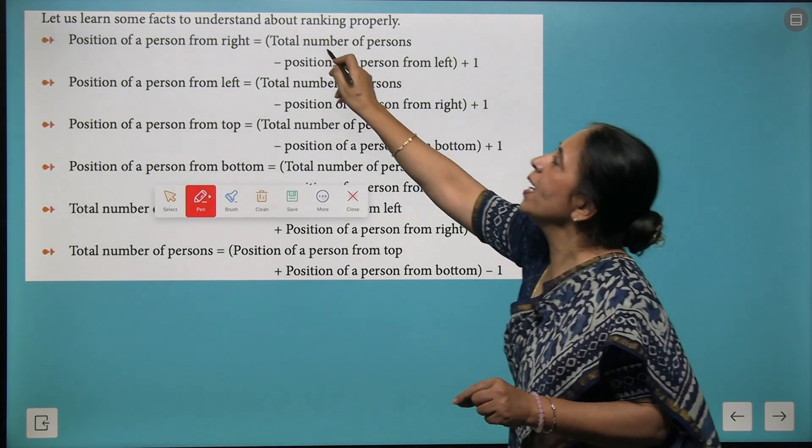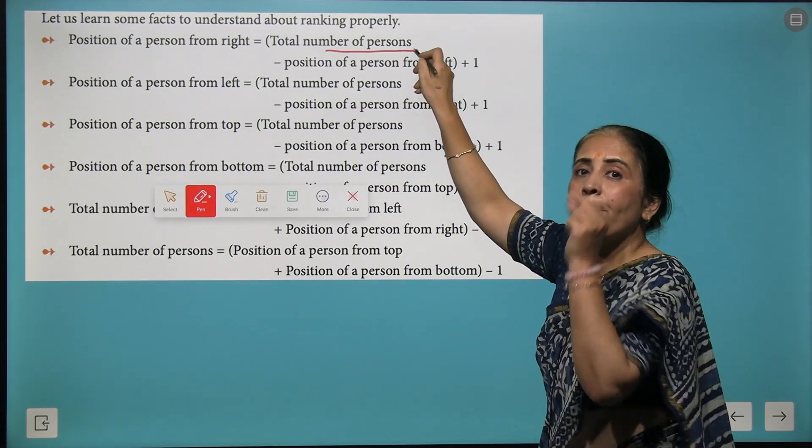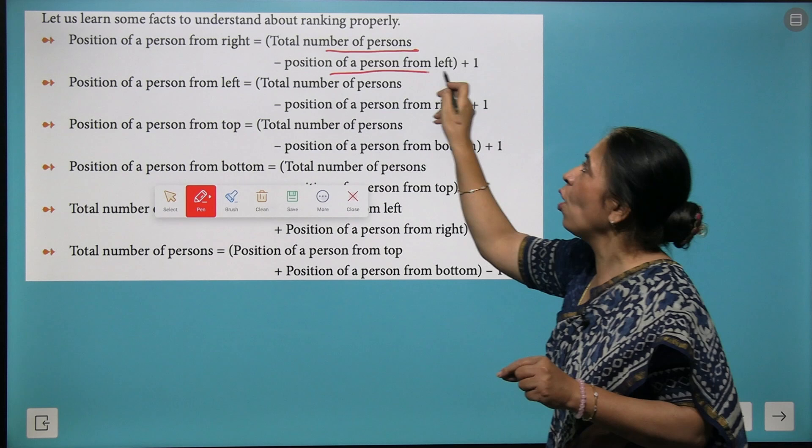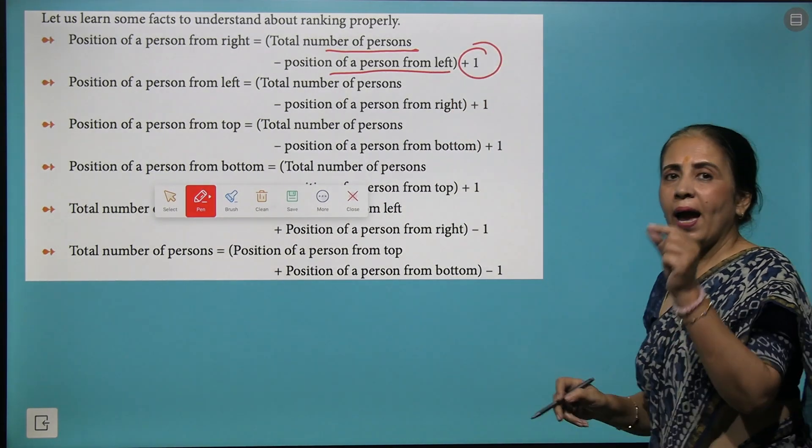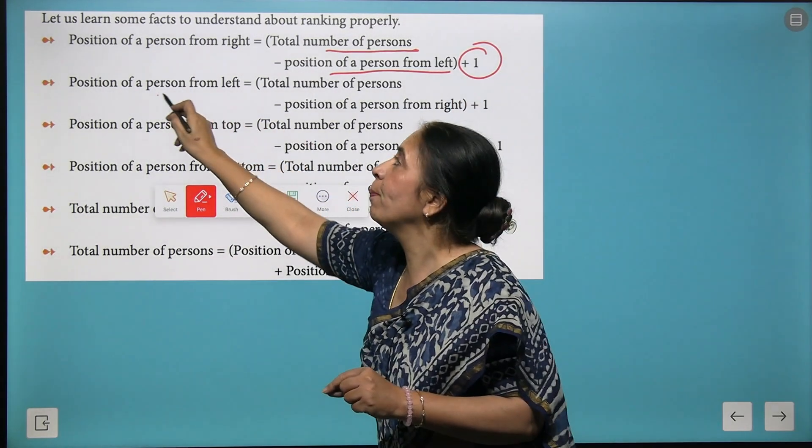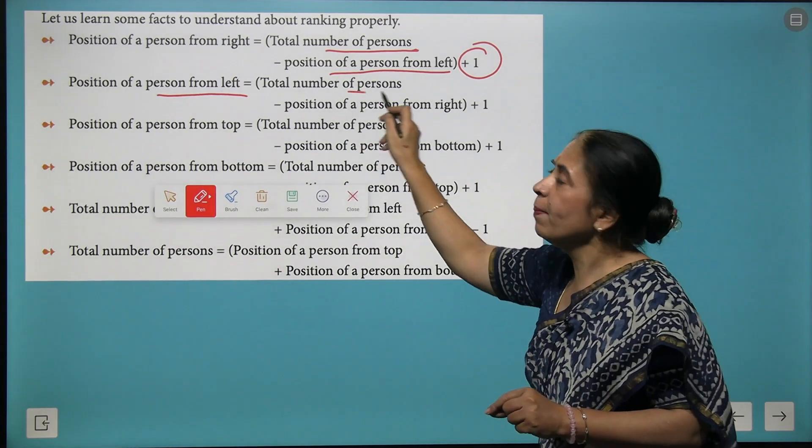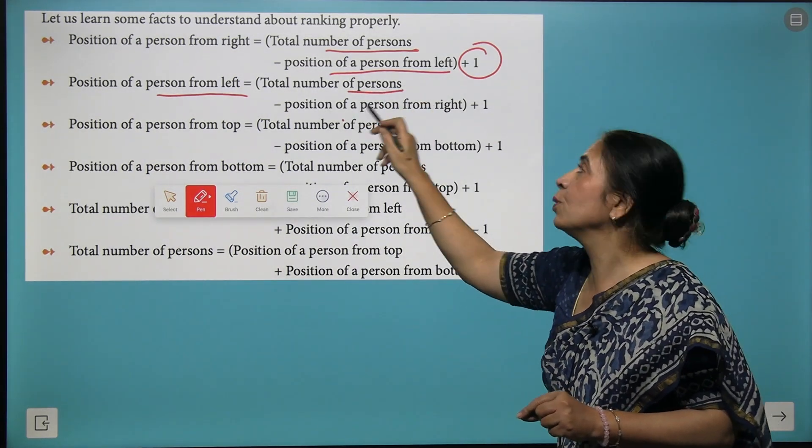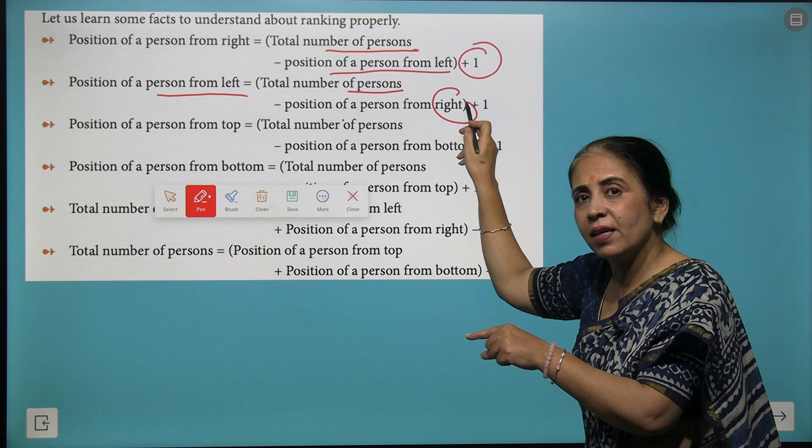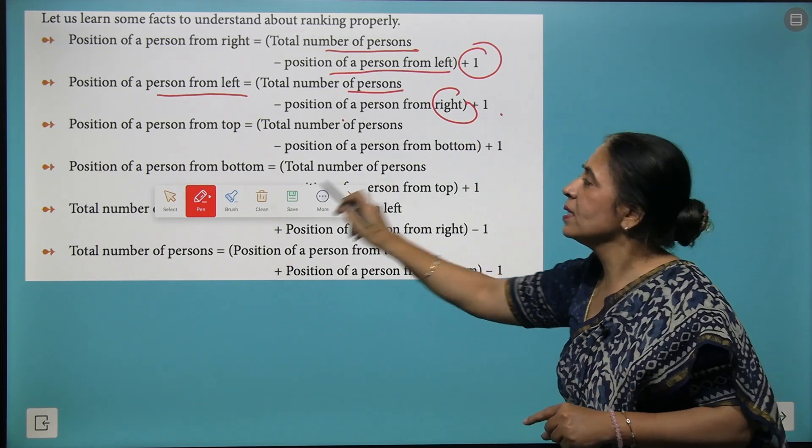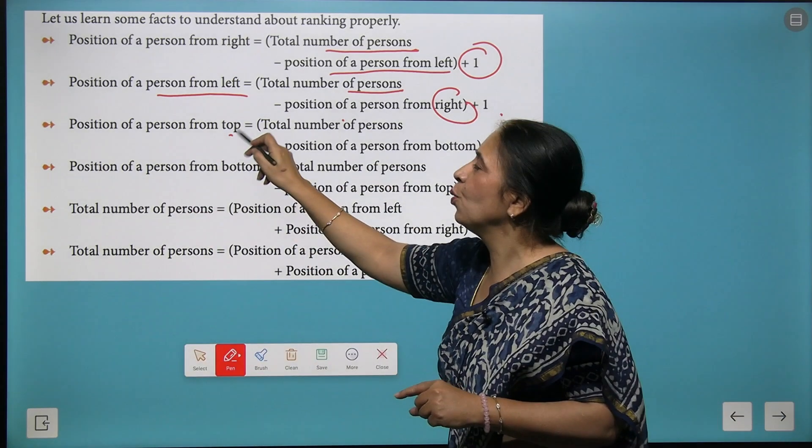Here we come with different more formulas. If you need to find the position of a person from the right, take total number of persons minus the position from the left plus one. If we want to know the position from the left: total number of persons minus position from the right plus one.